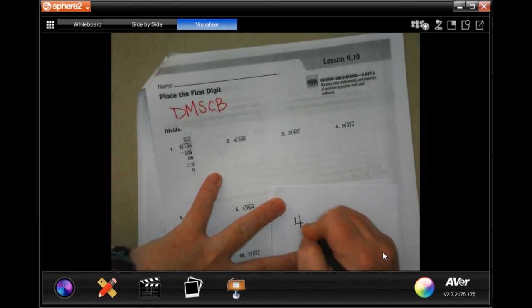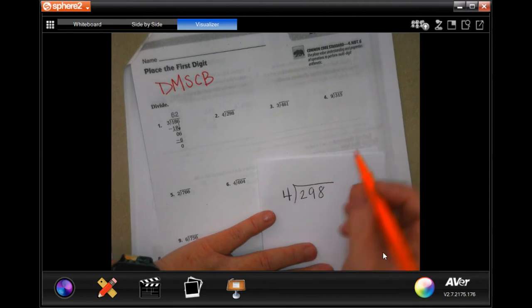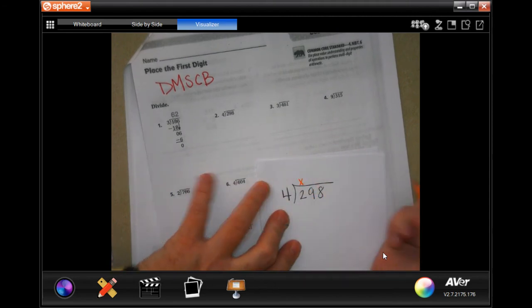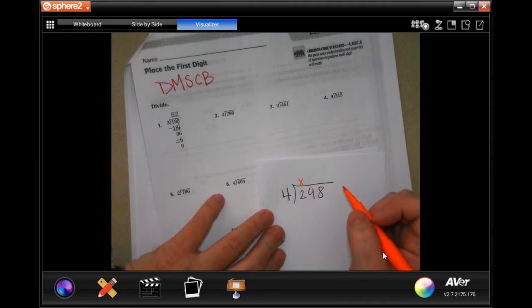So I'm going to write it on another piece of paper to give me a little bit more room. 4 into 298. Now 4 is not going to go into 2, so I'm going to put a placeholder. Whatever I do, I want to make sure I'm lining it up so that I know what number I'm supposed to bring down when I bring it down.